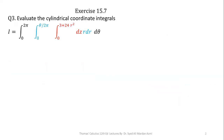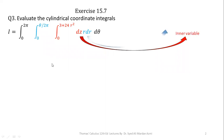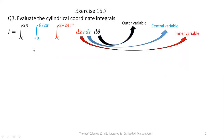If we have to solve a triple integral in cylindrical coordinates, the order of integration is fixed: the innermost variable is always Z, the middle variable is always R, and the outermost variable is always theta. This arrangement is fixed in cylindrical coordinates — we perform integration with respect to Z first, then with respect to R, and then with respect to theta. It is an iterative process with a fixed order.